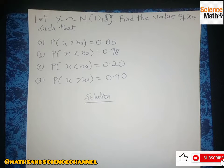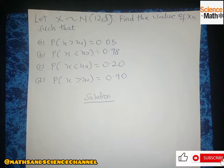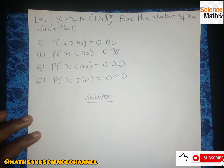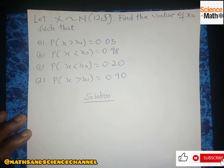We are given a question on the central limit theorem, basically on normal distribution. The question says to approximate the normal distribution into brackets 12 and 5, where 12 becomes mu and 5 is the standard deviation.